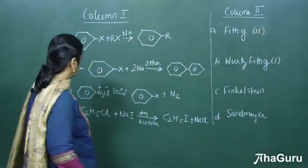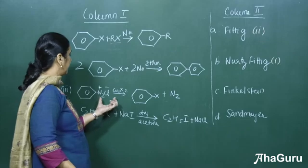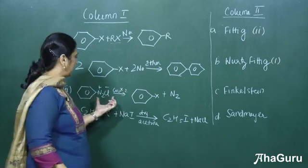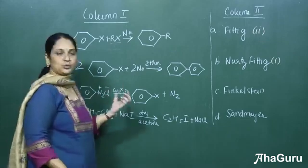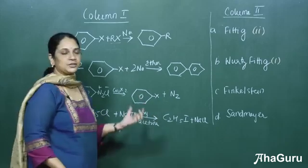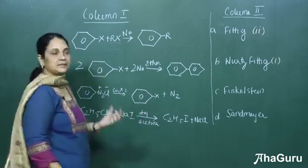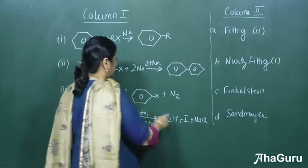Coming to the third one, we can see here this is benzene diazonium chloride reacted with Cu2X2, giving you a halogen substituted benzene. So this is a Sandmeyer reaction. So this would be three.